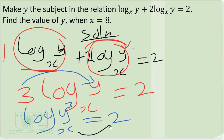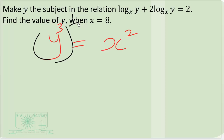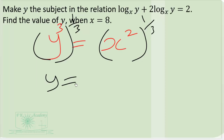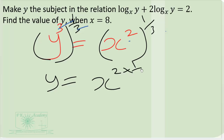We delog both sides by writing the equivalent exponential equation. The x here raises the 2, so we get x squared, and the number stays on its own: y cubed equals x squared. Taking the cube root of both sides — raising both sides to the one-third exponent — y equals x to the exponent 2 times one-third, so y equals x to the power of 2 over 3.